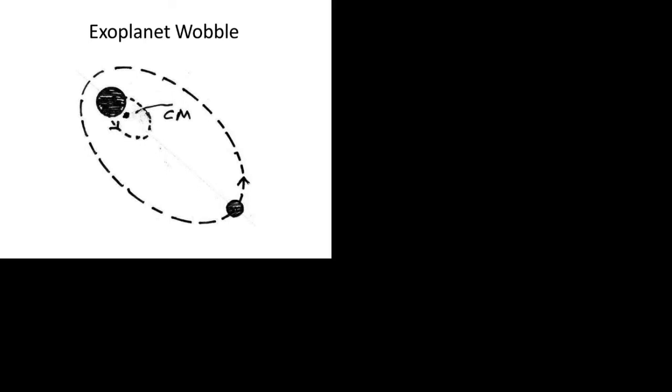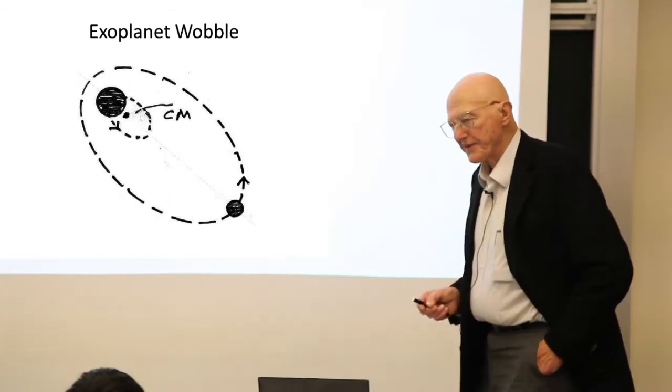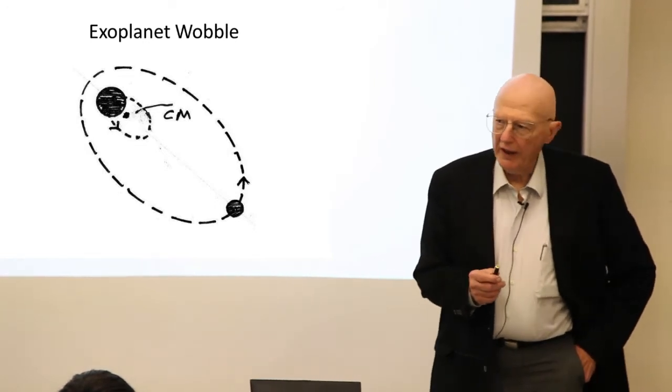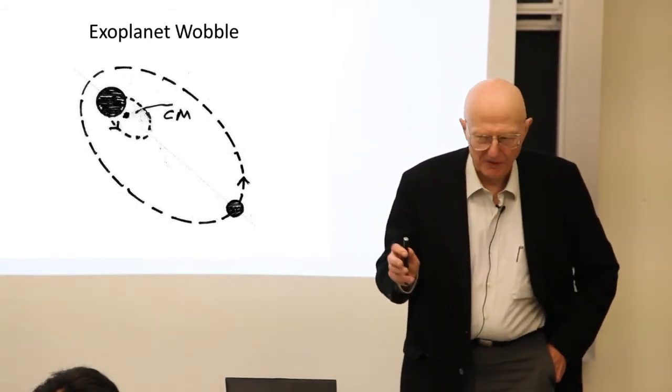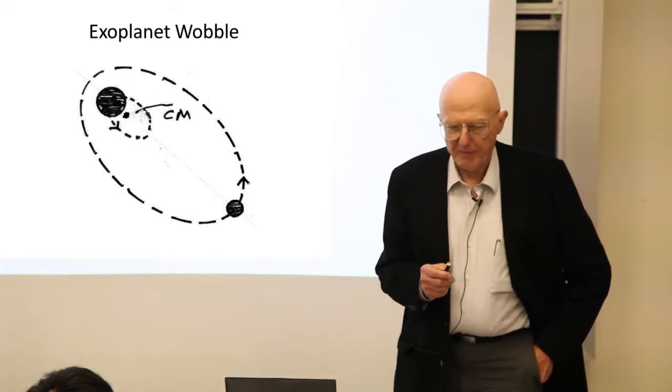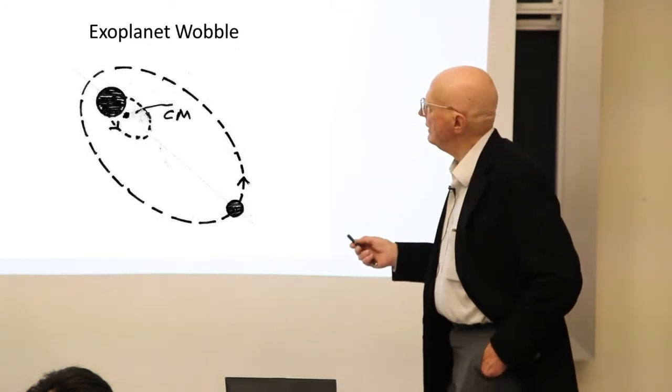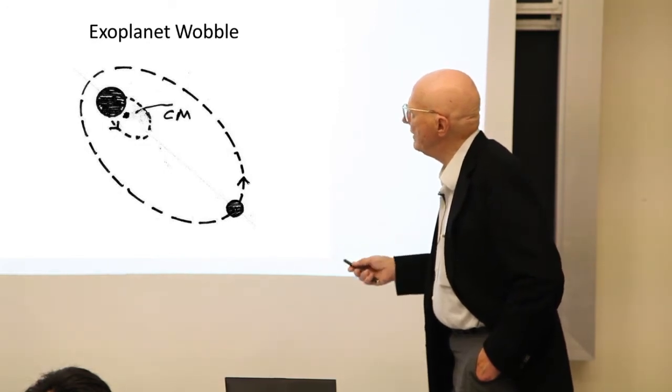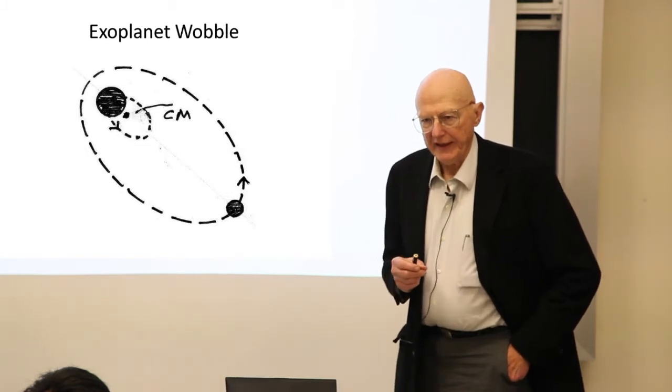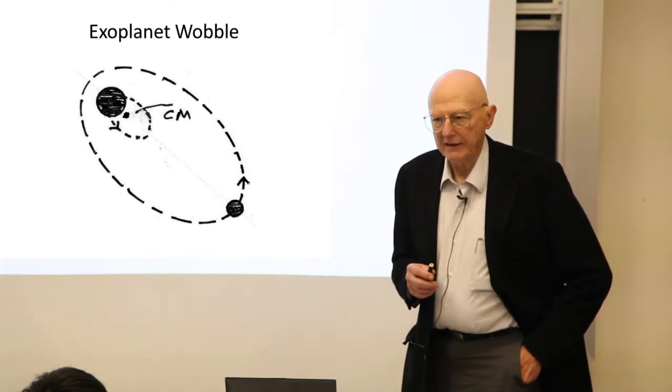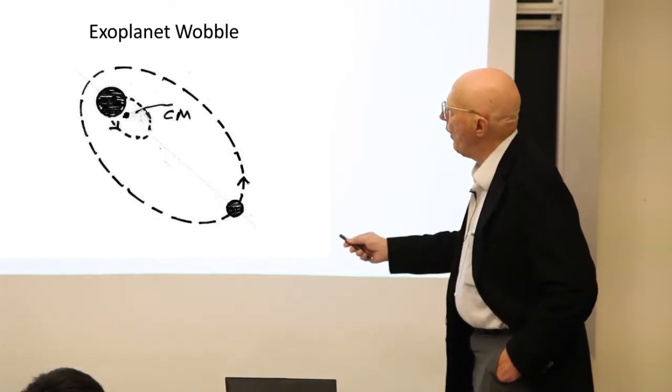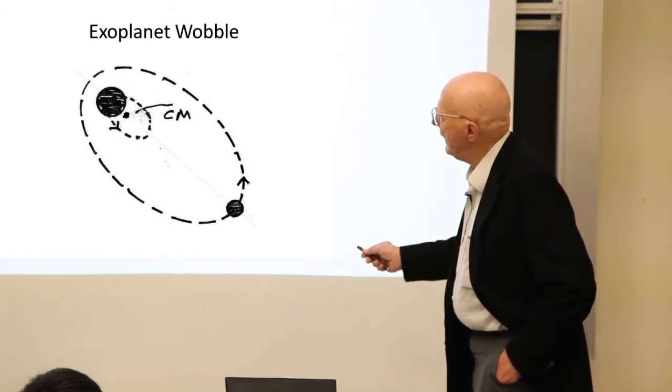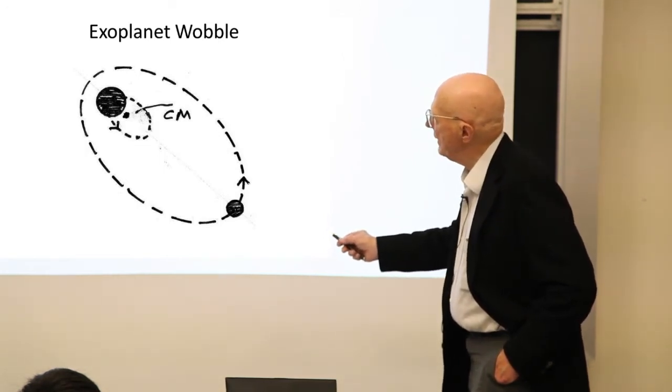This is kind of interesting because as the planet circles around, the star wobbles. It is this phenomenon that has been used by the Kepler satellite to discover planets around exo stars outside our solar system. Planets have been discovered using the wobble, because there's a Doppler shift in the light from the star. By looking at that, you get some idea of the physics involved in that planet.